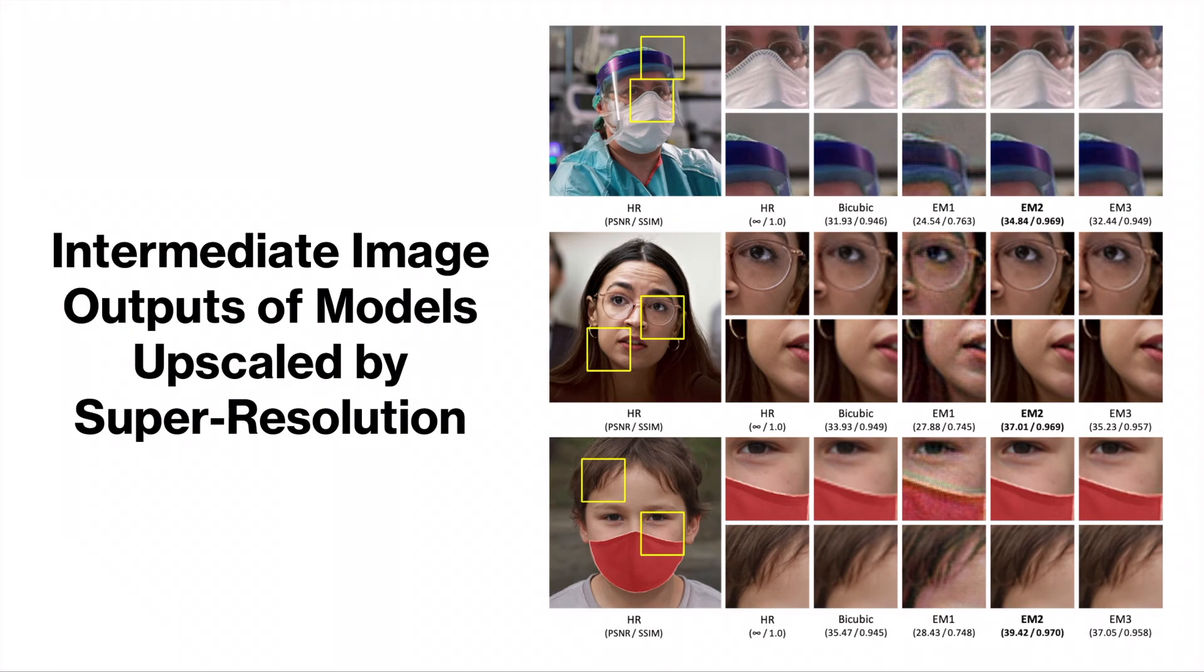And here are the image outputs from these models. These are the intermediate image outputs of the models after having performed super resolution with the best trained models. And a comparison is done between standard bicubic upscaling, high resolution ground truth, and the super resolution outputs of the various models that I trained.